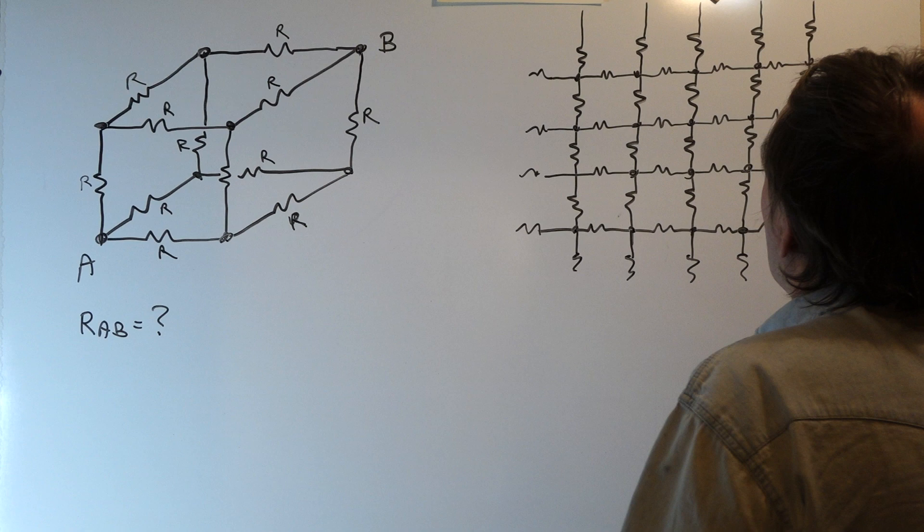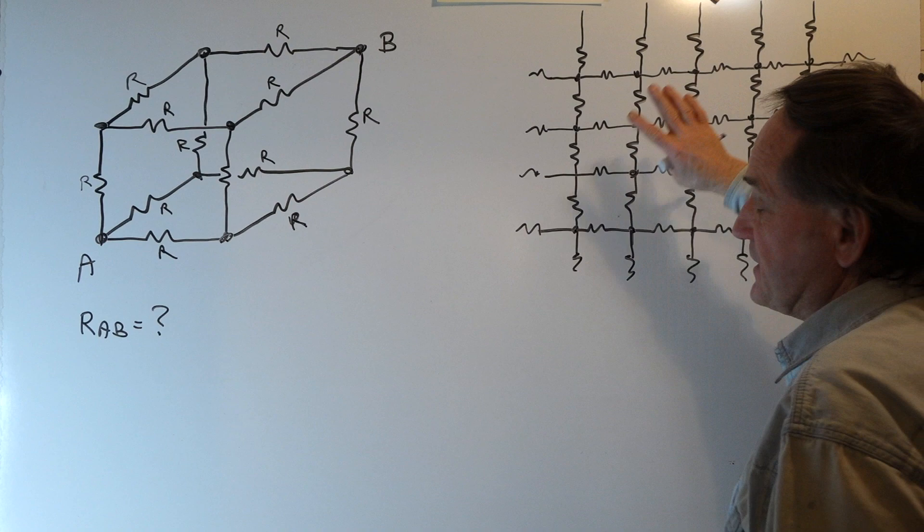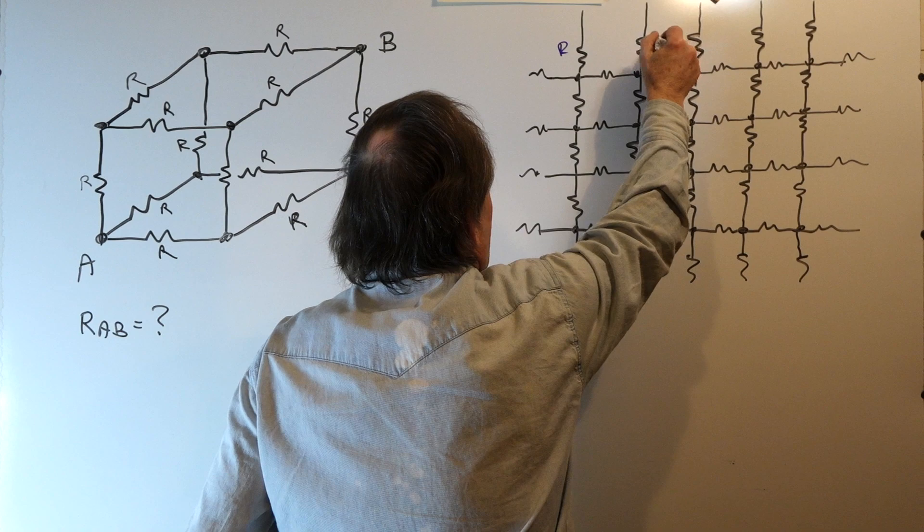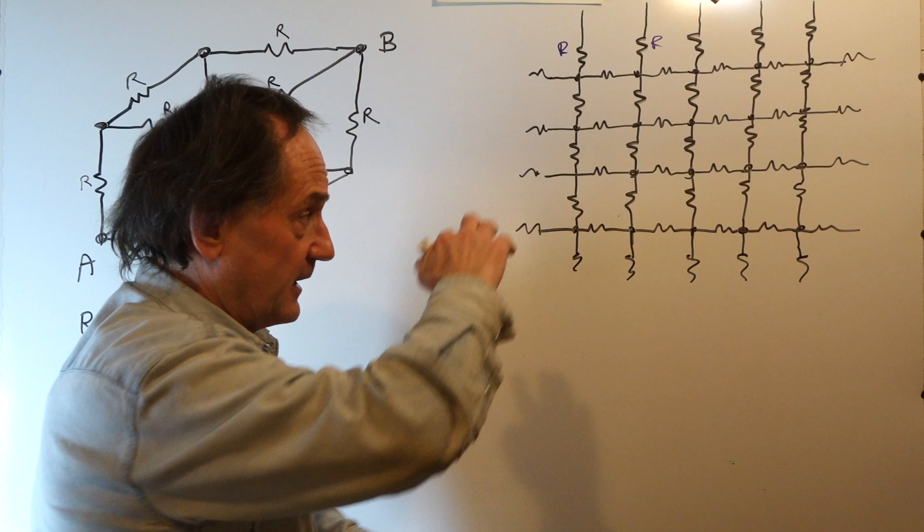Each resistor in this infinite grid has the same value. All resistors are of the same value. I'm not putting them down here because it will just clutter up the network. But all of these have value R. And it's an infinite grid. It goes on forever.